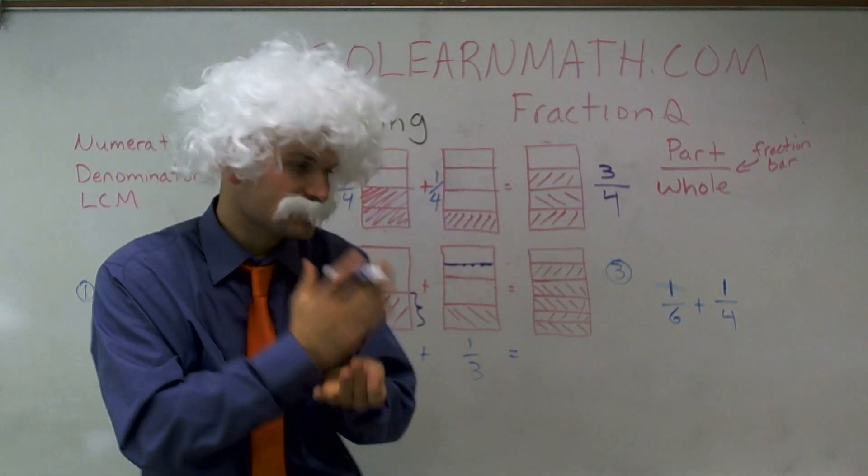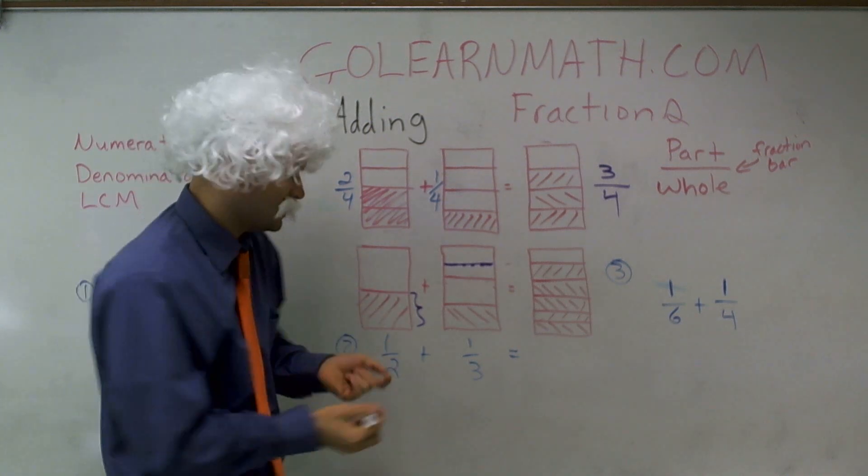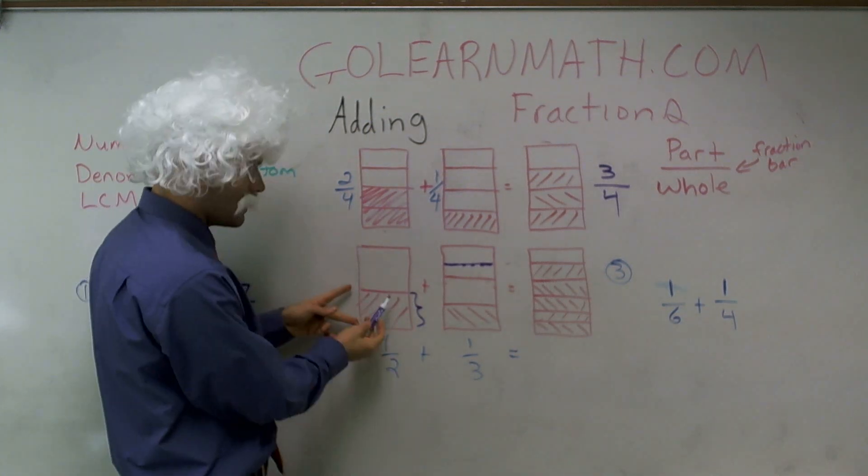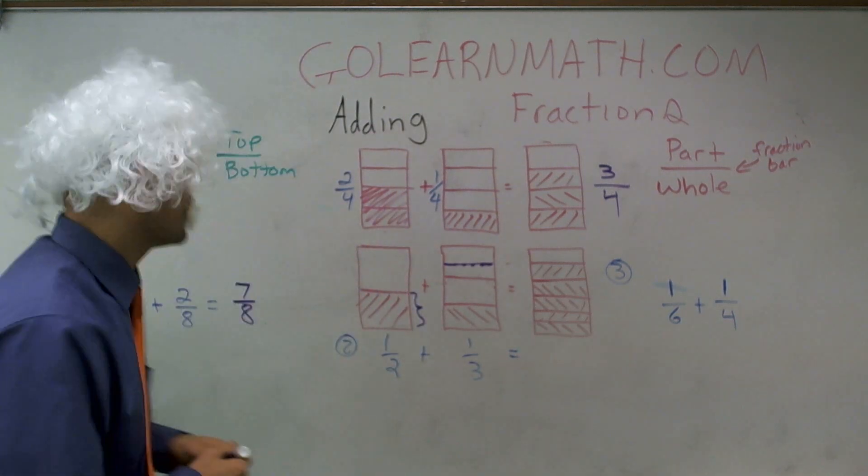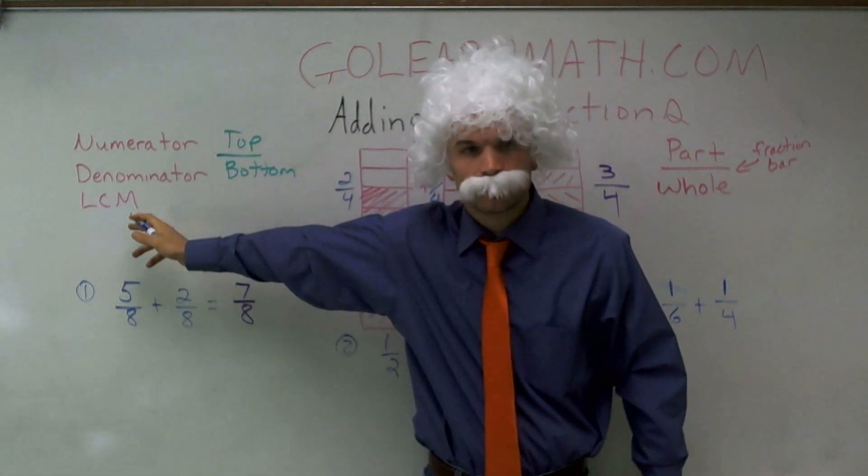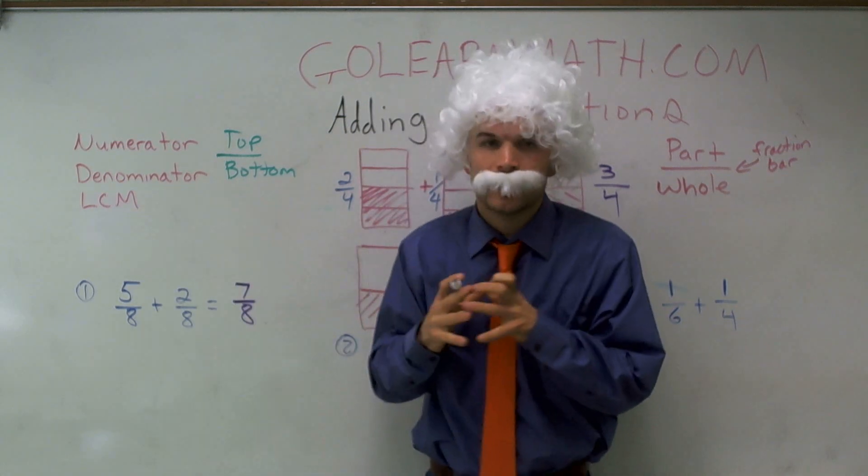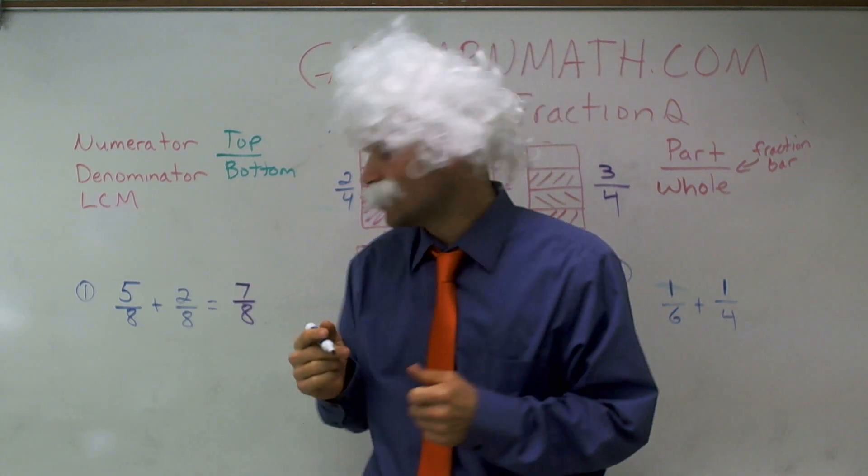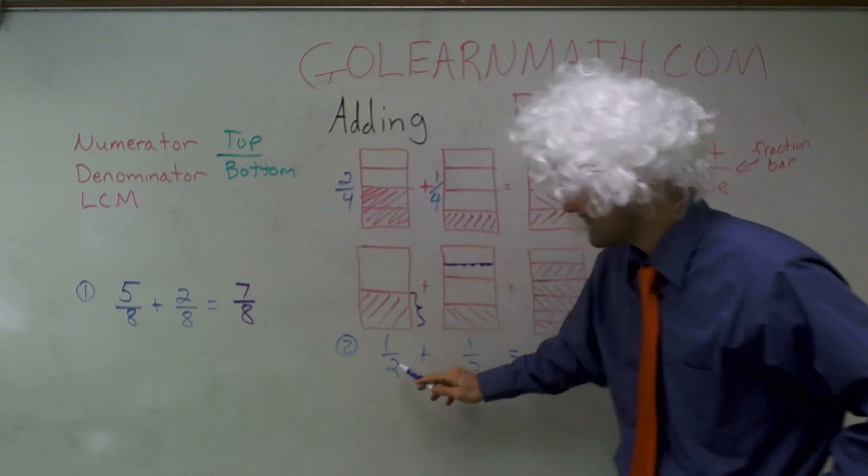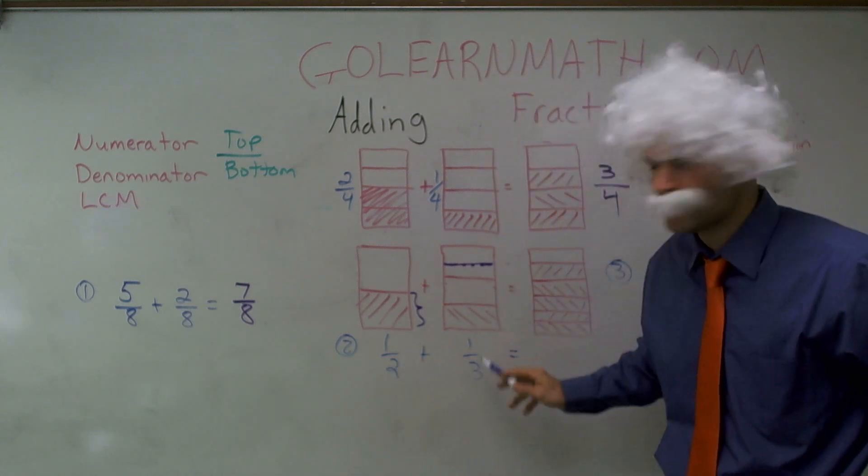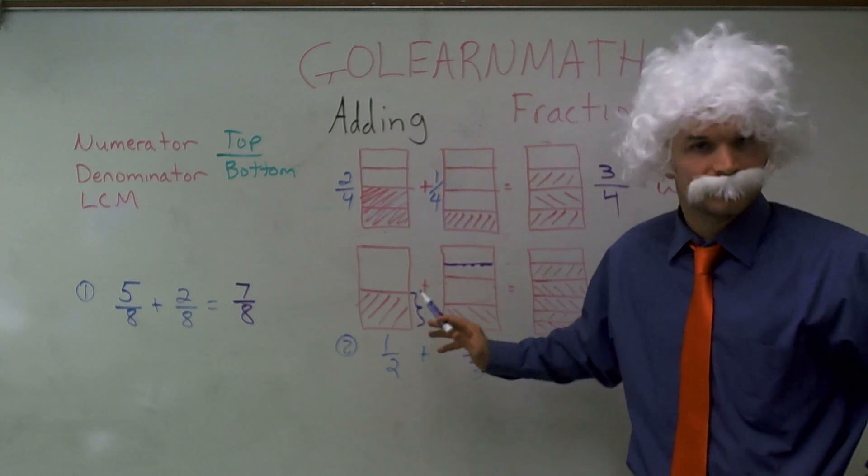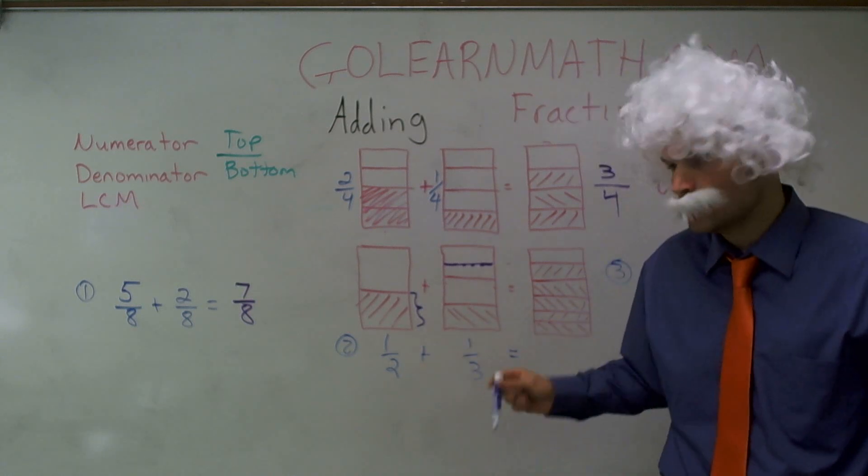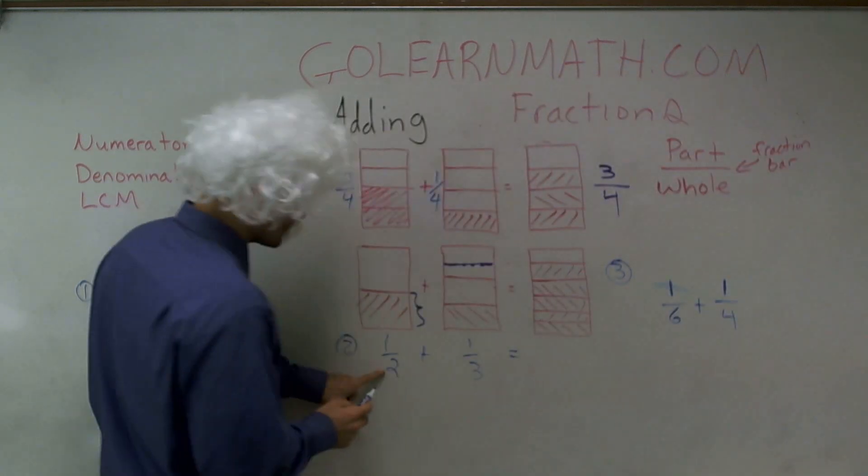Well, what I can do is section off, meaning divide my candy bar up into a certain number that fits into one half and fits into one third, and what we call that is finding your LCM. LCM represents your least common multiple. So what I want to do is find what number does two and three both go into, and the smallest number, the least number that two and three go into would be six.